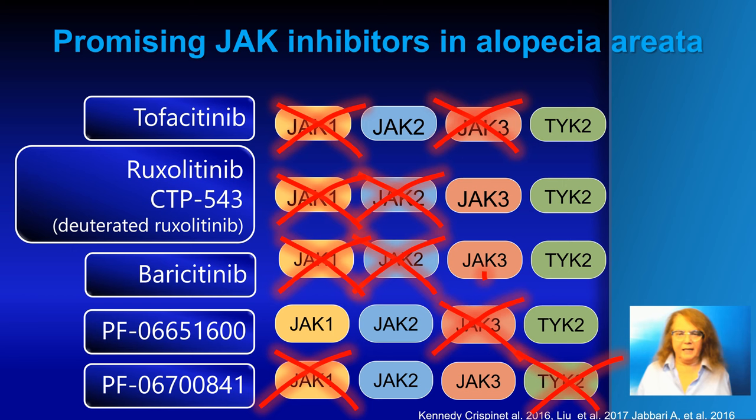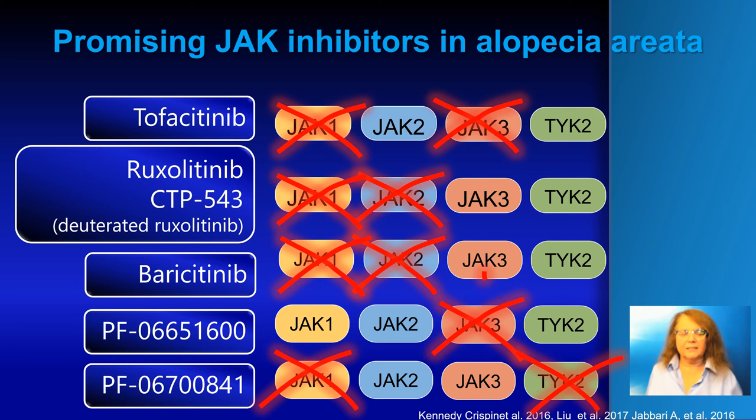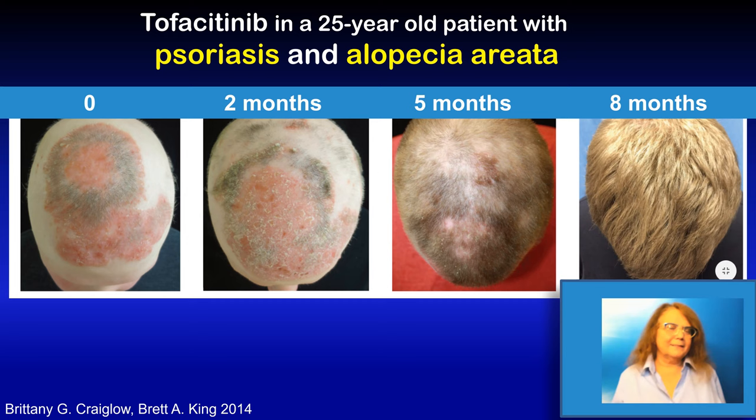There are many promising JAK inhibitors in alopecia areata. None of them is currently approved. What is quite interesting is that there are quite good results at different stages of development with JAK inhibitors which inhibit various JAKs. So I think we are in the process of finding the best molecule to inhibit for best efficacy in alopecia areata.